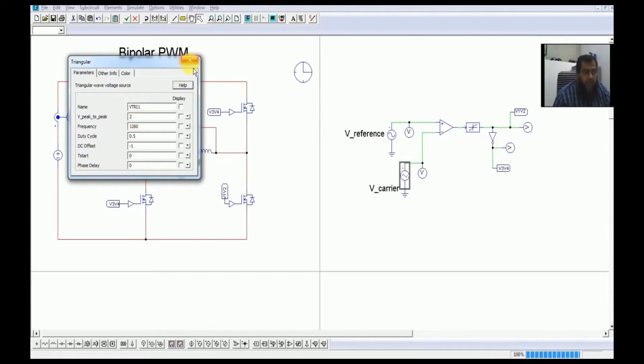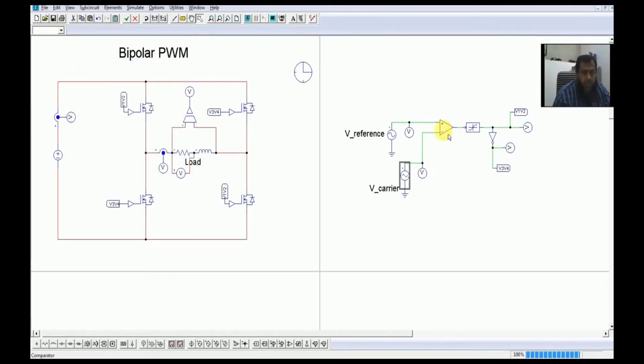Similarly, the carrier waveform has a peak-to-peak voltage equal to 2 volts, which means the peak value of this carrier waveform is equal to 1. So that suffices the purpose of setting the value of MA equal to 0.8. The other thing is to make MF equal to 21. We need to multiply 21 by the fundamental frequency, that creates it equal to 1260 Hertz.